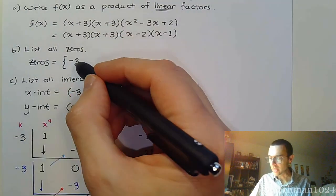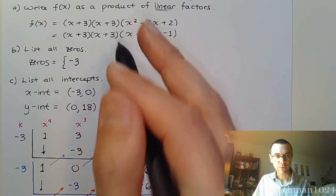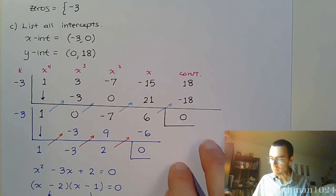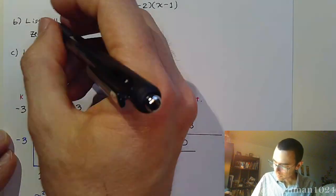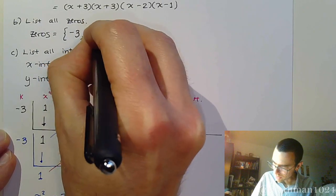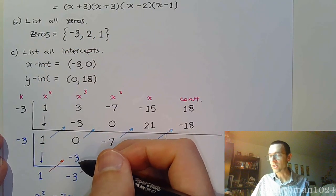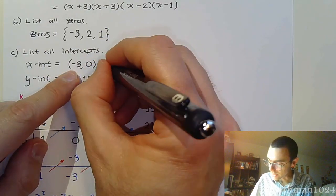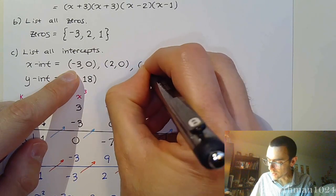Your zeros. We've got negative three with a multiplicity of two. And from the work that we have at the bottom of the page, we've got x equals two and x equals one. So, we get two and one. And since both of those guys are real, they will correspond to x-intercepts. So we have the x-intercept of (2, 0), and (1, 0).